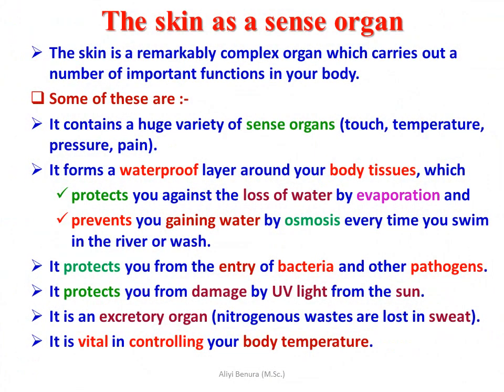The skin is a remarkably complex organ which carries out a number of versatile functions. It contains a huge variety of sense organs for temperature, pain, and pressure. It forms a waterproof layer around the body's tissues, protecting against water loss by evaporation and preventing water gain by osmosis when swimming or washing. It protects from bacteria and other pathogens, and from damage by ultraviolet light from the sun. It also acts as an accessory excretory organ, as nitrogenous wastes are lost in sweat, and it is vital in controlling body temperature.